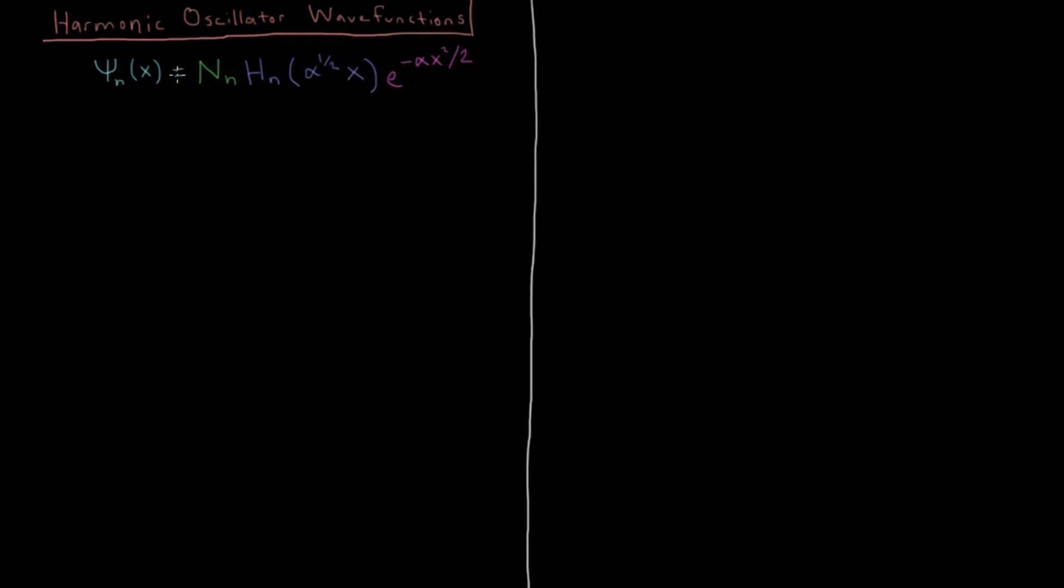Each wave function is going to have three parts. It's going to have a normalization constant, n. It's going to have a polynomial called the Hermite polynomials, h of n. And it's going to have a Gaussian.